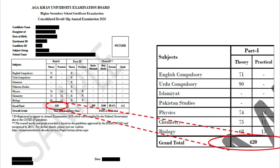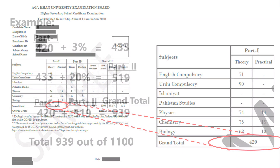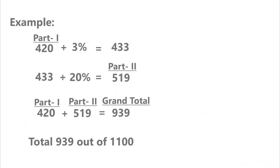In the row showing grand total, Part 1 score is shown out of 500 marks for 5 subjects. This Part 1 score is used to calculate the overall marks obtained.